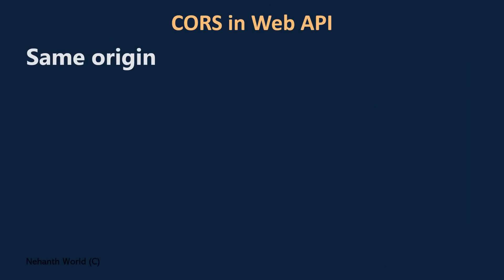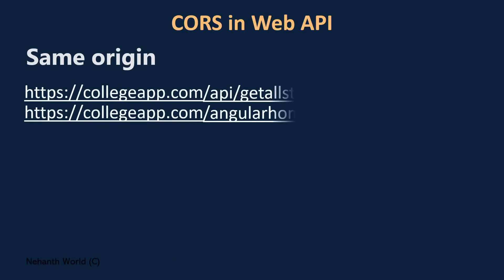Let us see what is same origin. When discussing Cross Origin Resource Sharing, we need to understand what cross-origin and same origin mean. There are two web applications: one is a Web API application and the second is an Angular UI application consuming these APIs. These two are having the same origin. Origin is a combination of schema, plus base URL, plus the domain extension (.com or .net), plus the port. Here you can see both websites are using HTTPS, CollegeApp.com, and the default port 80 — so these two are the same origin.